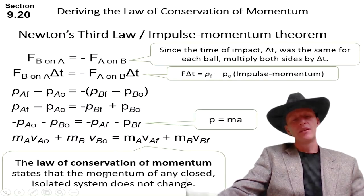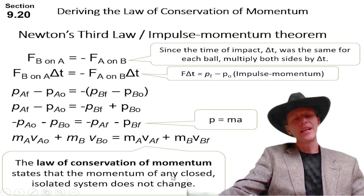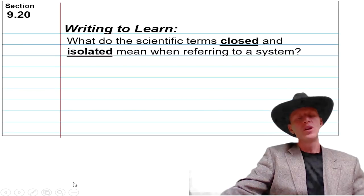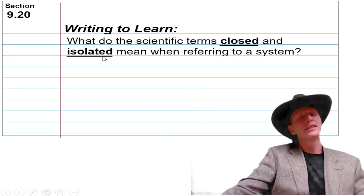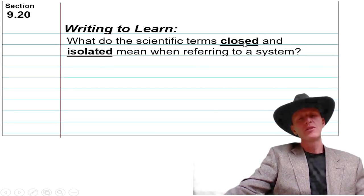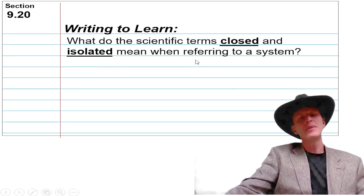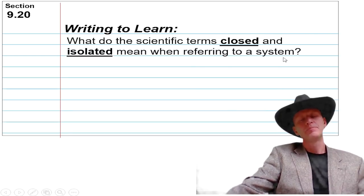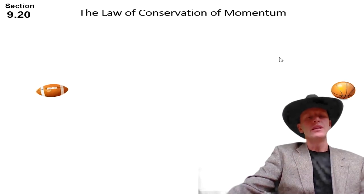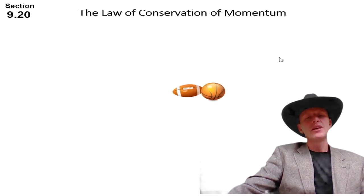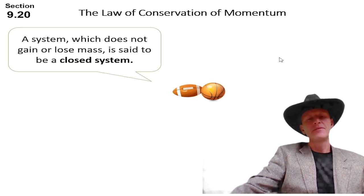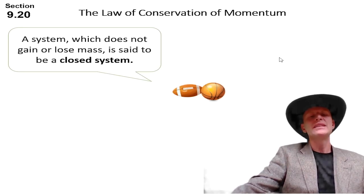So the big words here: states that momentum of any closed and isolated system. We've got to figure out, if you want to pause the video for a second, write down what you think closed and isolated are, you'll check that in a minute. But what do the scientific terms closed and isolated mean when referring to a system?